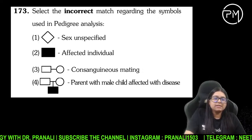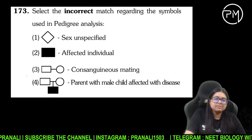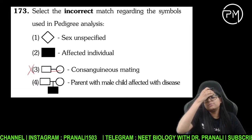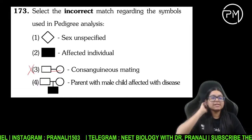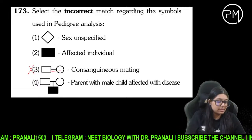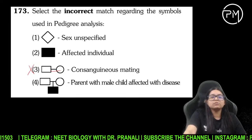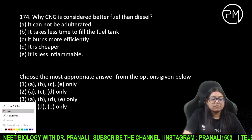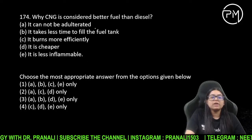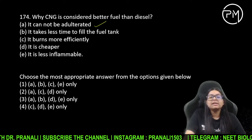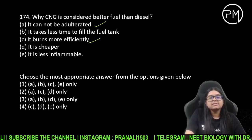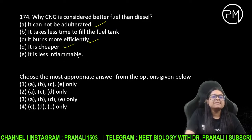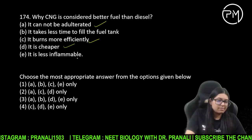Incorrect kya hai? 173 ka 3 kyunki yahan pe do line hoti hain — close relative mating jo hai, consanguineous mating mein kitni lines hoti hain, do line hoti hain. Why CNG is better fuel — CNG better fuel kyun hai? Kyunki use adulterate nahi kar sakte, acche se burn karta hai, cheaper hai — less inflammable hota toh better nahi hota. Toh ACD answer hoga.